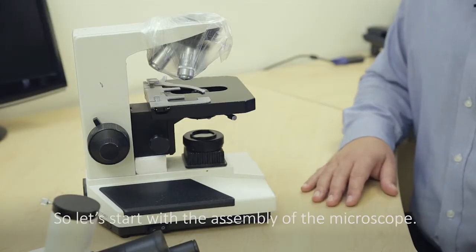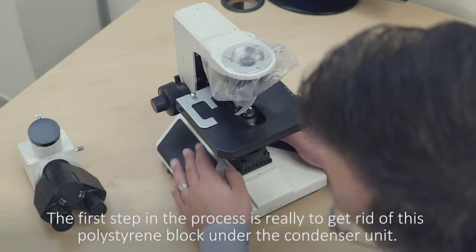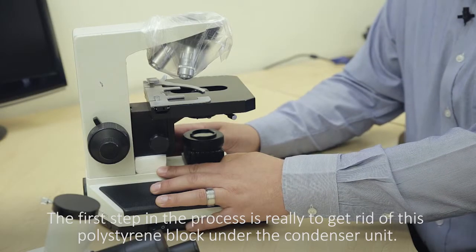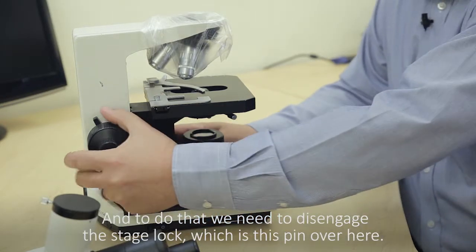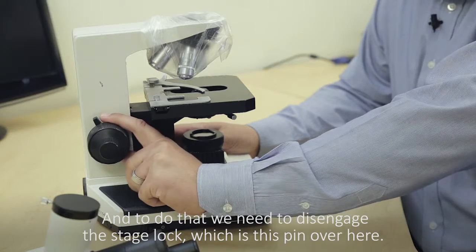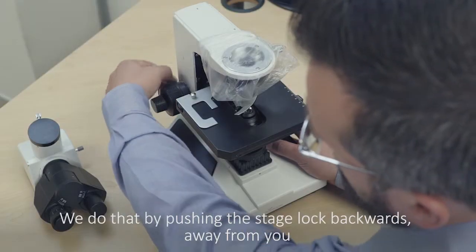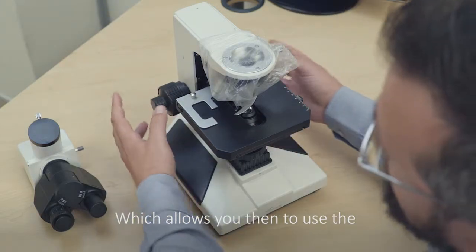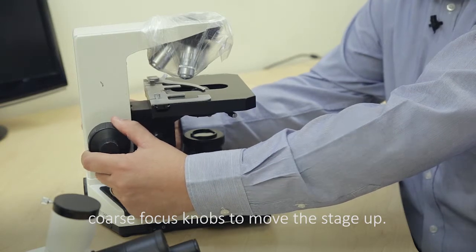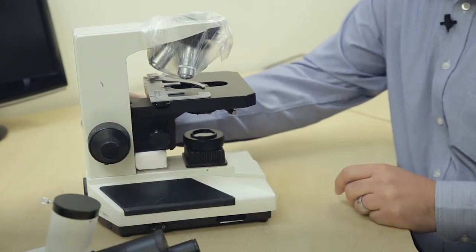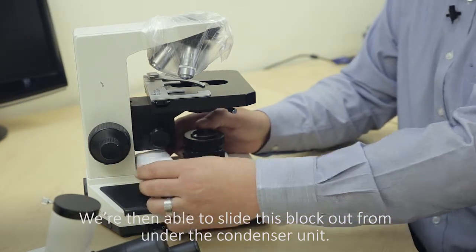So let's start with the assembly of the microscope. The first step in the process is really to get rid of this polystyrene block under the condenser unit. To do that we need to disengage the stage lock, which is this pin over here. We do that by pushing the stage lock backwards away from you, which allows you then to use the coarse focus knobs to move the stage up. We're then able to slide this block out from under the condenser unit.